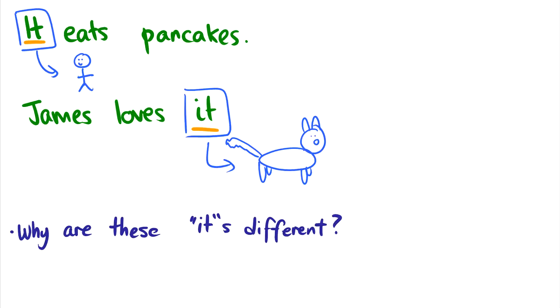These also have theta roles. So it here, this is the agent. This is the eater of the pancakes. James loves it. This is the theme. This is the thing that is being loved. So these it's have theta roles, while the previous it, the expletive it, does not have any theta roles.